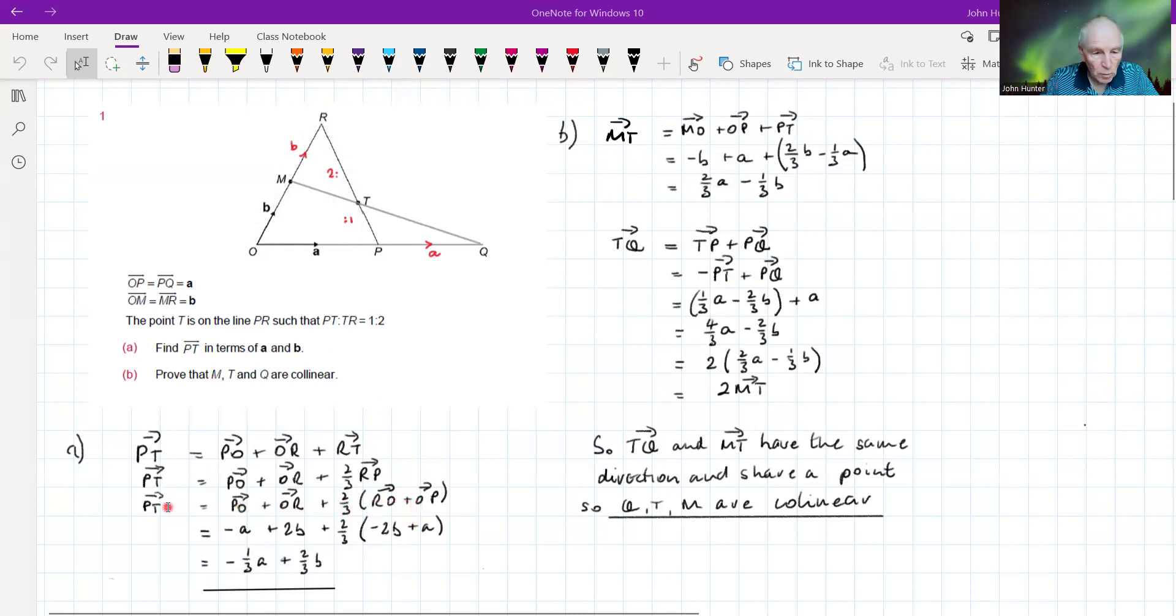So PT is therefore equal to PO plus OR plus two-thirds of RO plus OP. Right, now we've got this in a form that we know all the component parts. PO is actually the opposite of OP, so that's going to be minus A. That's the negative, 2B, OR is 2B, and then two-thirds of RO minus 2B plus OP, which is A.